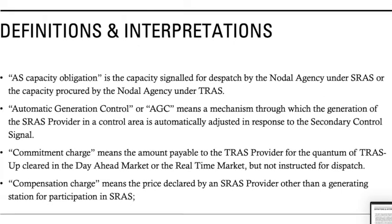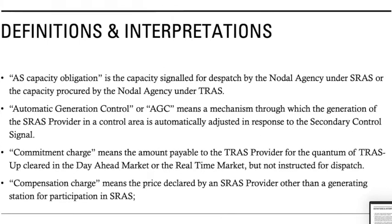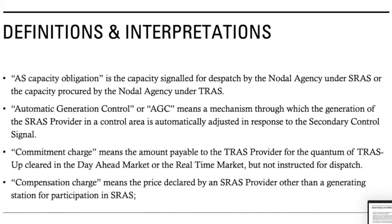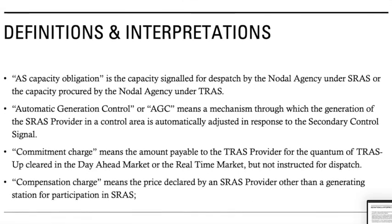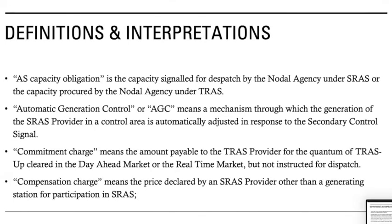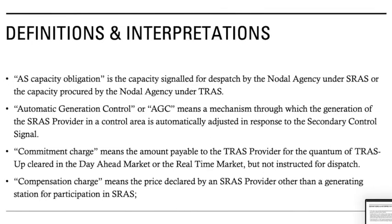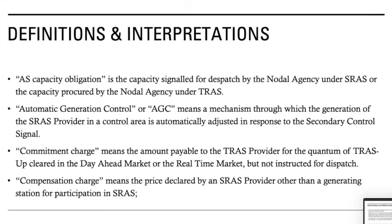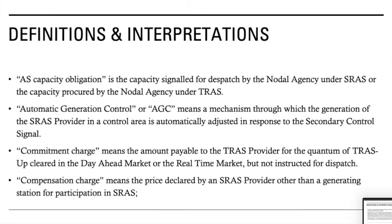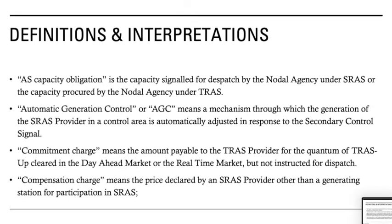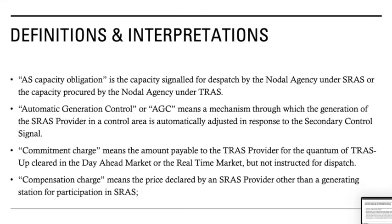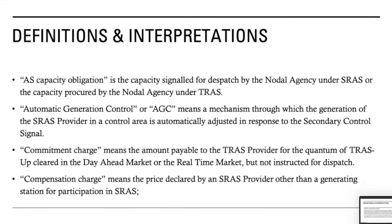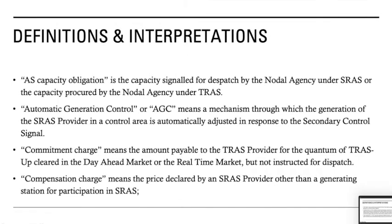Coming to the next term — Automatic Generation Control or AGC — which is basically a mechanism through which the generation of the SRS provider in a control area is automatically adjusted in response to the secondary control signal. For example, for a 660 MW plant, suppose a limit of 35 MW is provided. Based on the unit size, a plus or minus signal is generated — that is the maximum change which the grid can do in the unit's load set point. That change is basically called an AGC, meaning the generation control system is automatically in the hand of the grid.